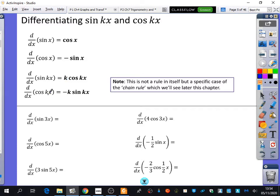And when you have cos of kx, it will still go to minus sine of kx, but you also multiply it by k, which is the coefficient of x as well. And I've written here that this is not a rule in itself, but it's a specific case of one of the rules that we come across called the chain rule, and it just kind of makes sense to start thinking about some of these things that we have right here.